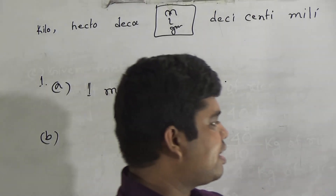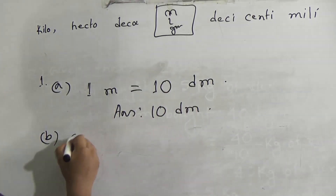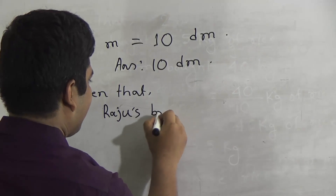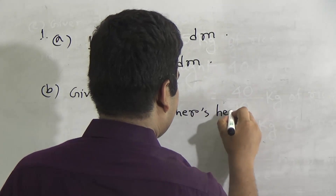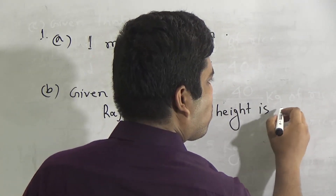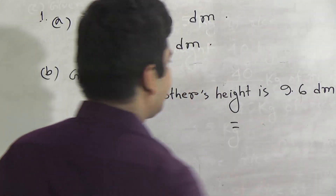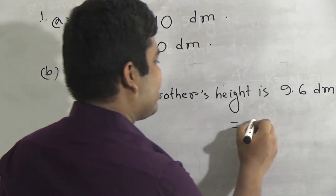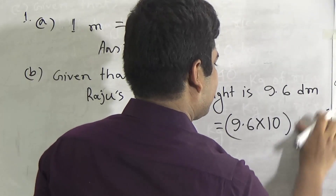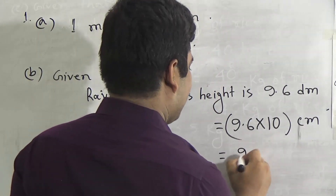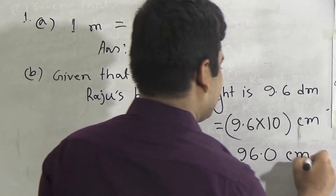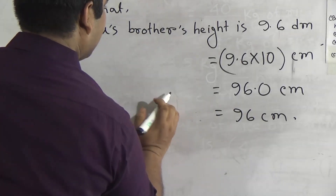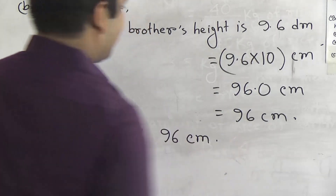Part B: How much is the height of Raju's brother in centimeter? Given that Raju's brother's height is 9.6 decimeter. We want to convert this into centimeter. 1 decimeter equals 10 centimeter. So we multiply 9.6 by 10 and we get 96.0, moving the decimal point. So 96 centimeter is the answer. The height of Raju's brother is 96 centimeter.